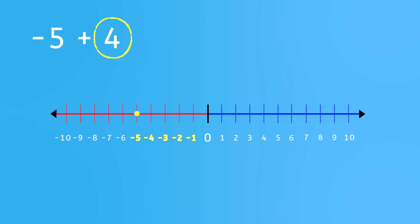Then we must add 4, as the number sentence tells us. Adding means moving to the right on the number line. So now, from the negative 5, move right 4 spaces. Where did you end up? That's right! Negative 1.